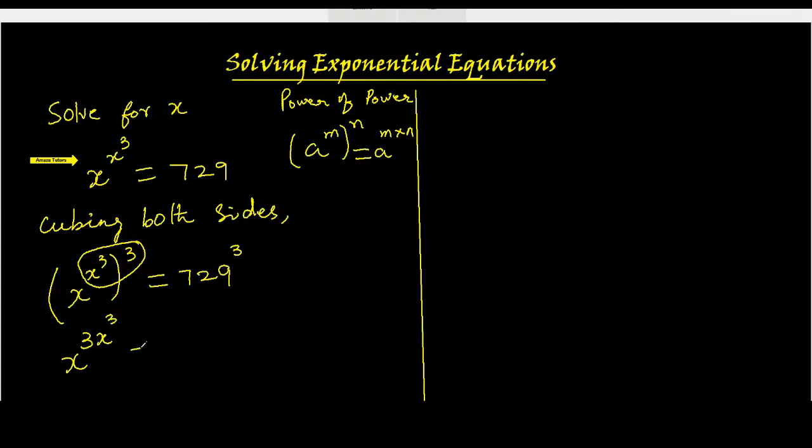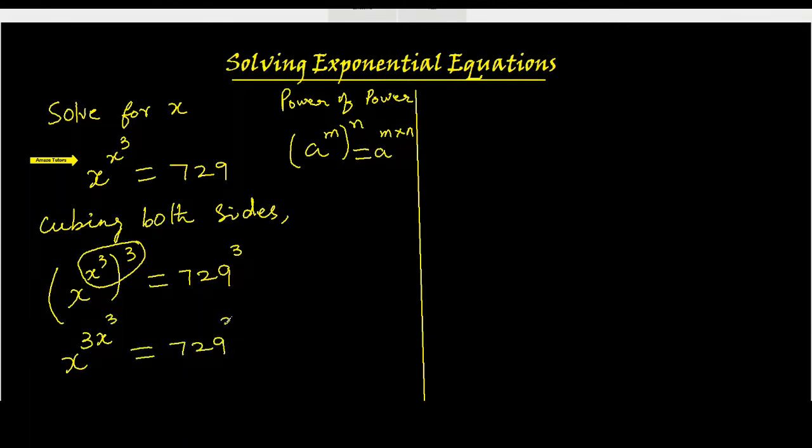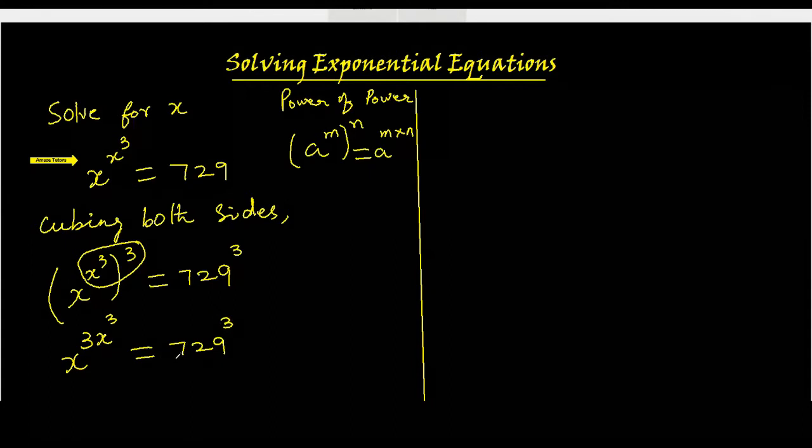Now again, if I use this the other way around, a power m times n can be written as a power m to the power n. That is what I am going to do now. X to the power 3, now take it to the power x cubed, equals 729 cubed.